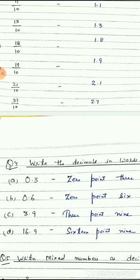Every decimal number has two parts: one on the left side and another on the right side. The left side part is called the whole part or integral part. The right side part is called the decimal part. In the middle is the decimal point — we generally call it 'point.' For example: 0.3, 0.6, 3.9, 16.9.